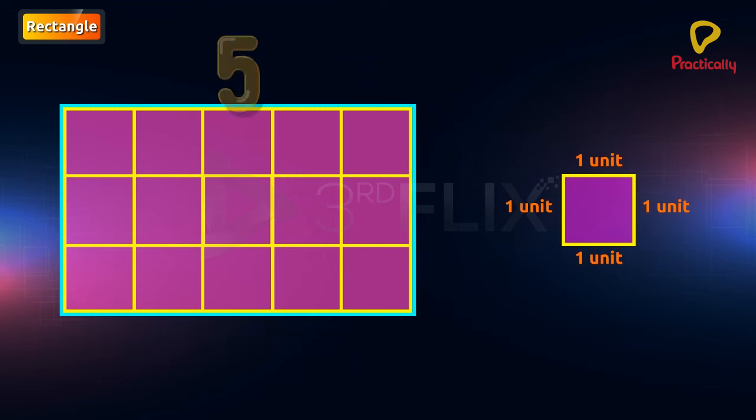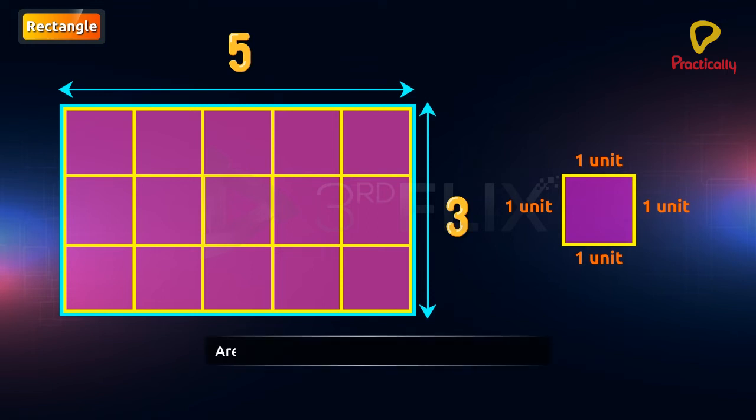Here, 5 is the length of the rectangle and 3 is the breadth of the rectangle. Area of a rectangle equals to the length multiplied by breadth square units.